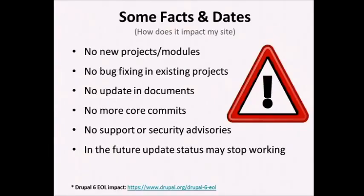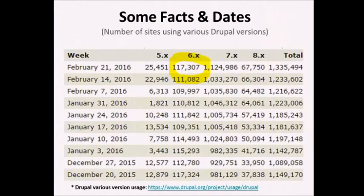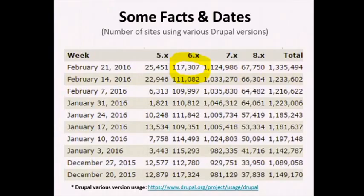We should migrate to another version since D6 is already end of life. This screenshot was taken yesterday — it shows how many projects are using Drupal. D6, highlighted in yellow, still has 117,307 sites using it as of yesterday, taken from the live Drupal.org site. Think about the people using D7 — it's maybe double that. And those who have started using D8: 67,000, which is a good number.